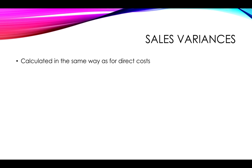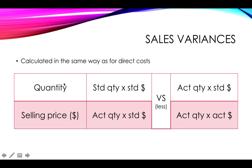Sales variances are calculated in the same way as direct cost variances. You can look at quantity sold and selling price. For the quantity variance, keep the standard price constant and compare standard quantity times standard price to actual quantity times standard price. For the selling price variance, keep quantity constant and compare actual quantity times standard price to actual quantity times actual price. The difference between budgeted and actual figures gives you the sales variances.